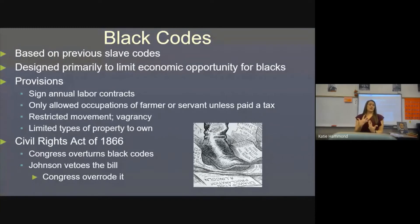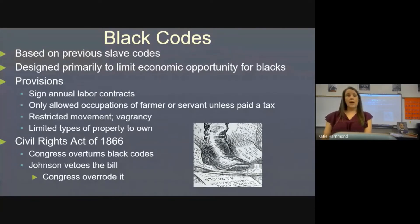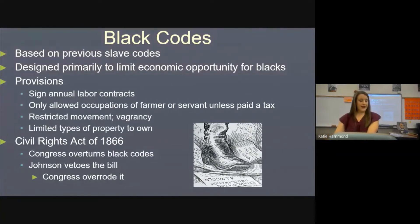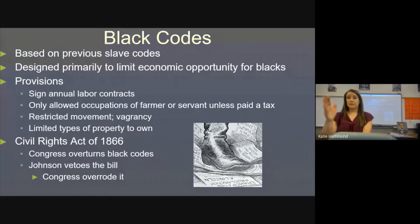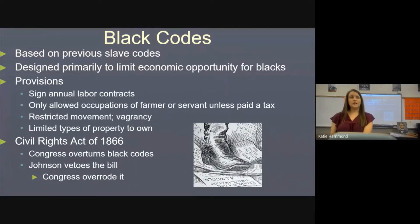Johnson's plan was so easy that the South wasn't really going to learn its lesson. Evidence includes: he granted way too many pardons — 15,000 pardons in a matter of months. Also, some Confederates were voted back into Congress — for instance, Alexander Stephens from Georgia was voted back to his seat. If a southern state is voting the same politicians back in as pre-Civil War, they probably aren't changing.